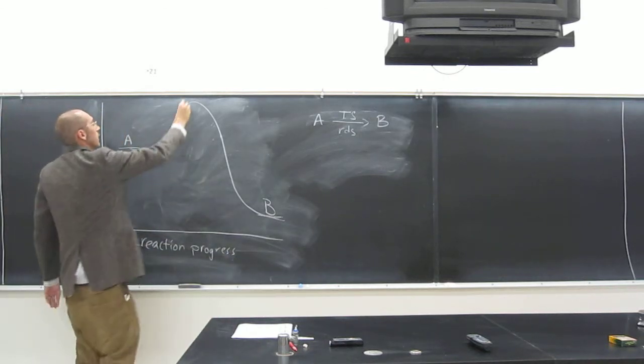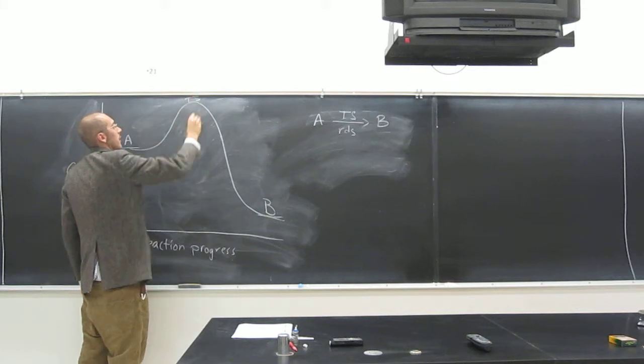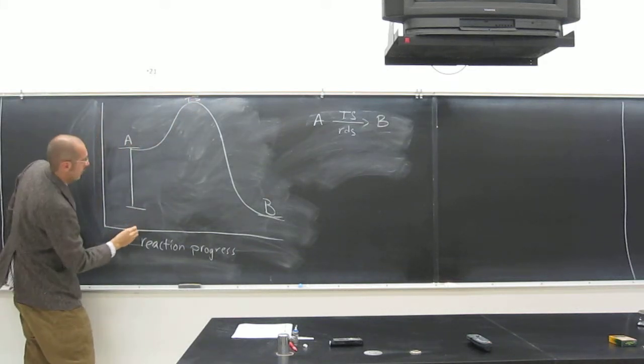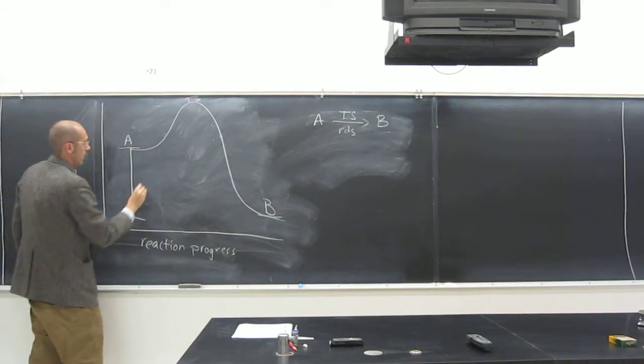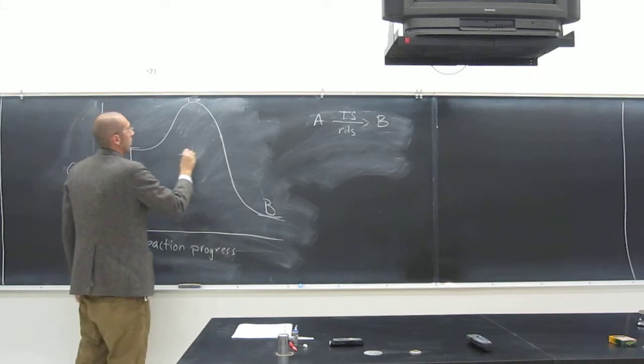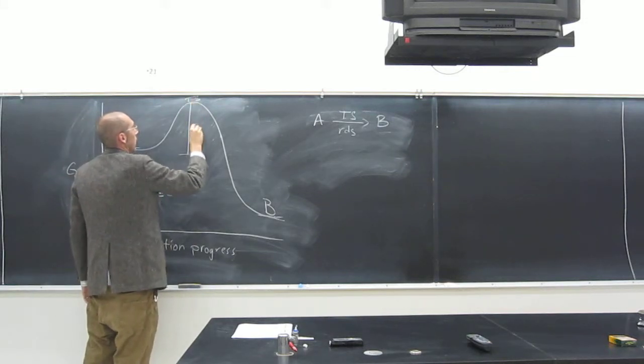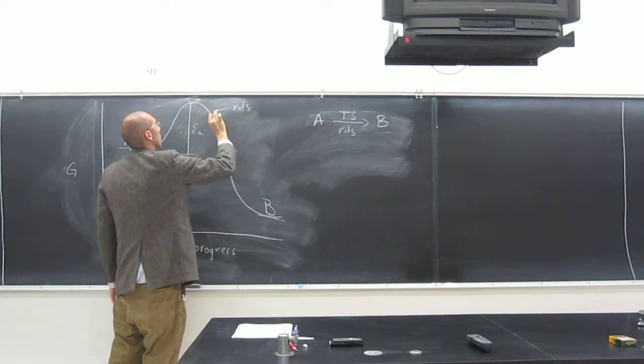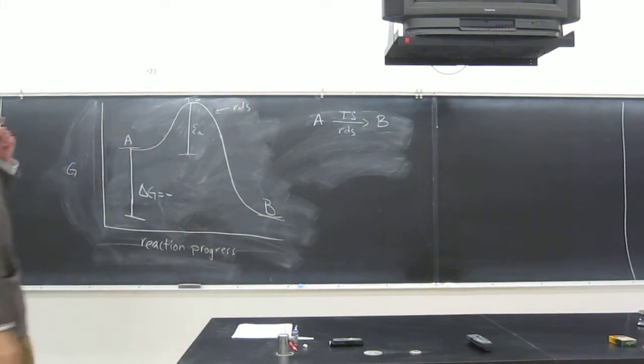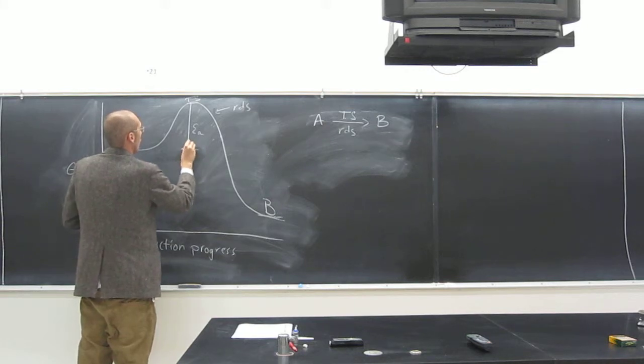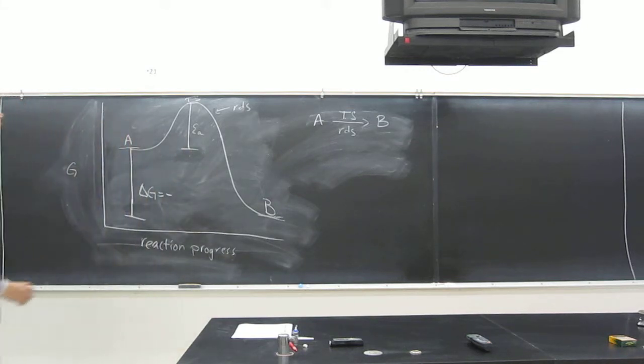Okay, there are these things called—so let's write everything. Transition state is up there. Delta G negative, EA, right? Okay, so let's throw in a catalyst.